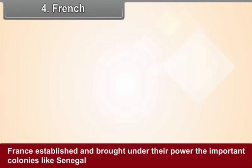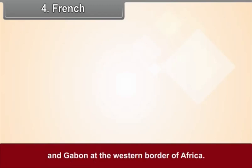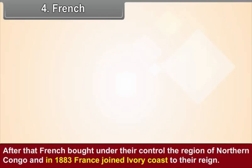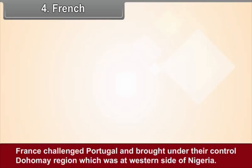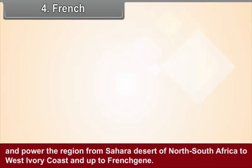Fourth, the French. France established and brought under its power important colonies like Senegal and Gabon at the western border of Africa. After that, France brought under its control the region of Northern Congo, and in 1883, joined Ivory Coast to its reign. France declared Port Novo as a safety region and challenged Portugal, bringing under its control the Dahomey region on the western side of Nigeria. By 1914, France brought under its control the region from the Sahara Desert of North Africa to West Ivory Coast and up to French Guinea.